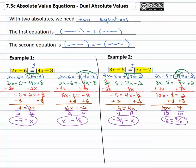Solving equations where we have two absolute values in the equation, we simply use a positive and negative for the expression on the right. Be sure you use parenthesis as you distribute on the next step.